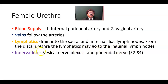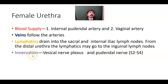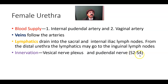Innervation is from the vesical nerve plexus and the pudendal nerve. Both somatic and autonomic (parasympathetic) nerve fibers arise from the S2, S3, and S4 spinal cord segments and ganglia.